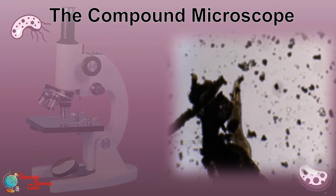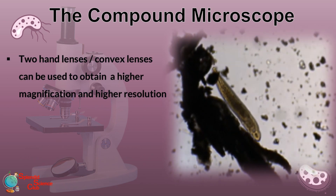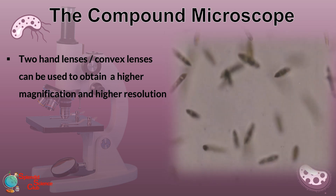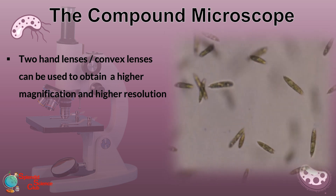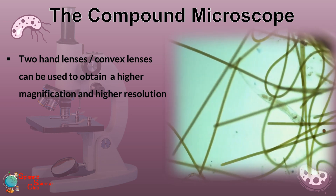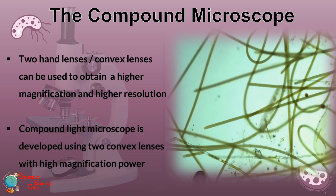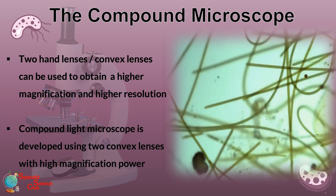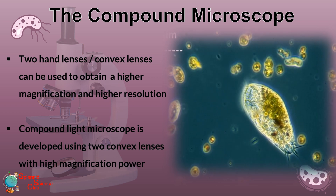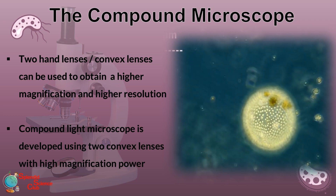So what is actually a compound microscope? If you observe a specimen by keeping one hand lens over the other with a particular distance between them, you'll see the magnification gets higher — and the resolution too. Compound light microscopes used in labs are also having two convex lenses with high magnification power. Here we can see a microscopic observation of a pond water sample — you'll never see such organisms from your naked eye.